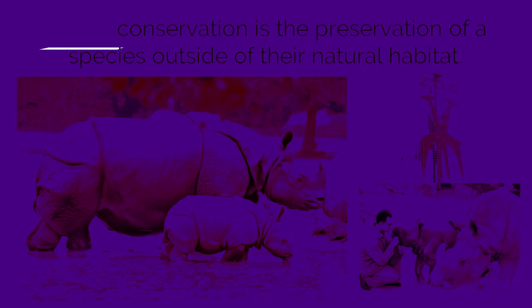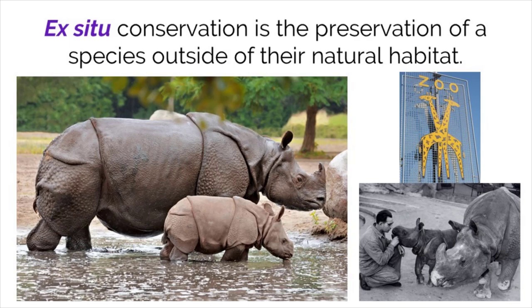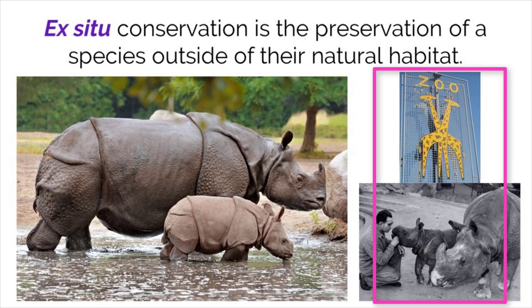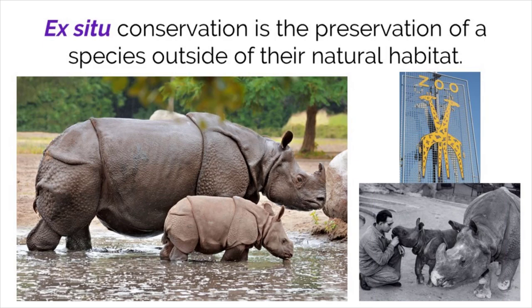Another type of conservation is ex-situ, which means that organisms are taken out of their natural habitat to be taken care of. Many of these organisms face extinction and are placed in zoos and other locations to breed and increase their population size. The Swiss Rhinoceros breeding program does just that with endangered rhinos.